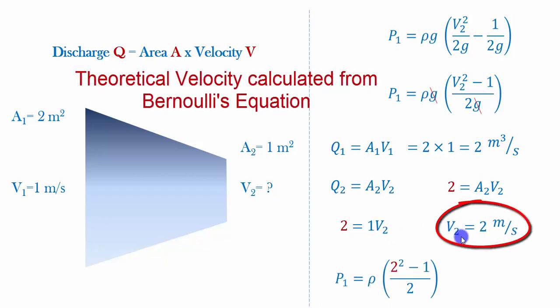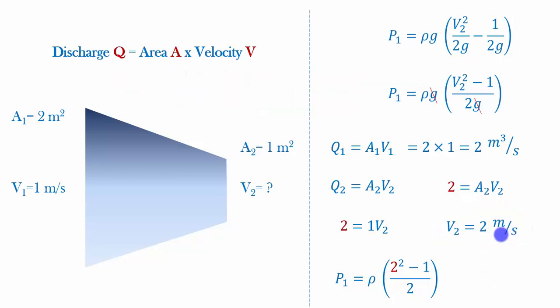Now we have to substitute this velocity term here to get the pressure at the inlet. This is also one output that we have obtained from this Bernoulli's equation. We will also compare this using our CFD results.